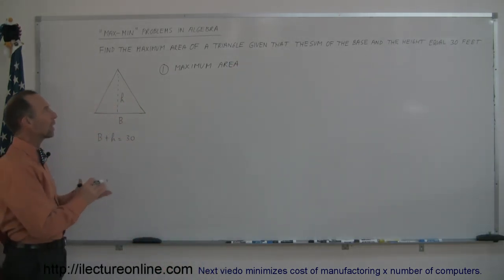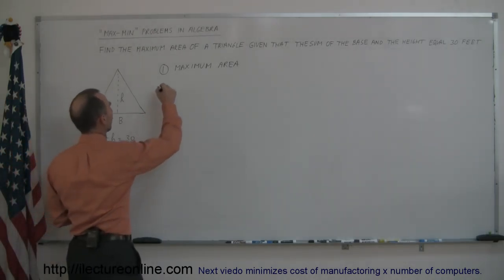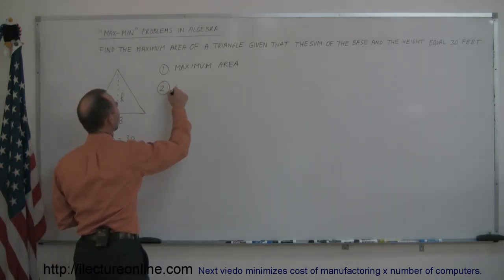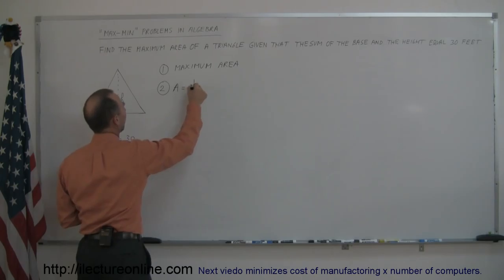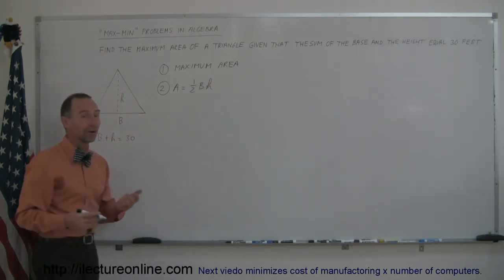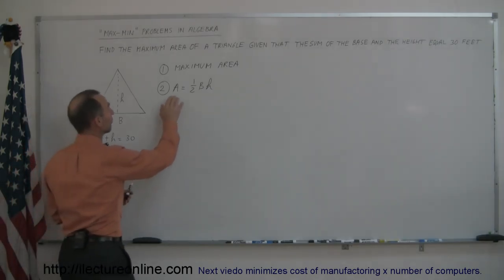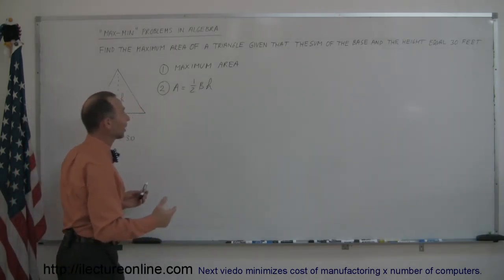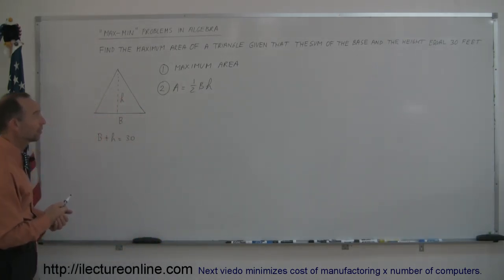The second thing is you want to find an equation for that. So the equation for the area of a triangle is equal to one half the base times the height. So the second thing you do is try to find an equation that defines what you're trying to maximize. In this case, the area, so the area is one half the base times the height.